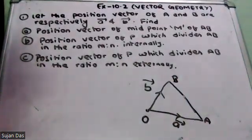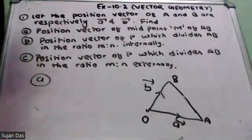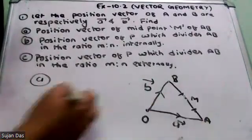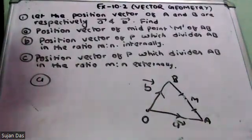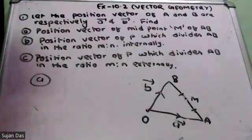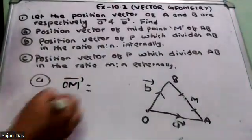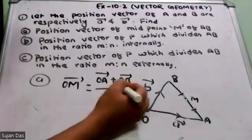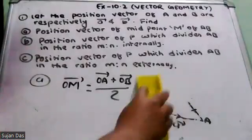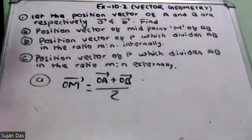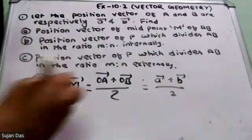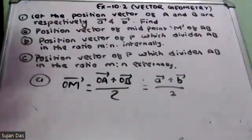So OA vector is vector a. The midpoint formula gives us: OA vector plus OB vector, divided by 2. So the position vector of the midpoint is vector a plus vector b, divided by 2.